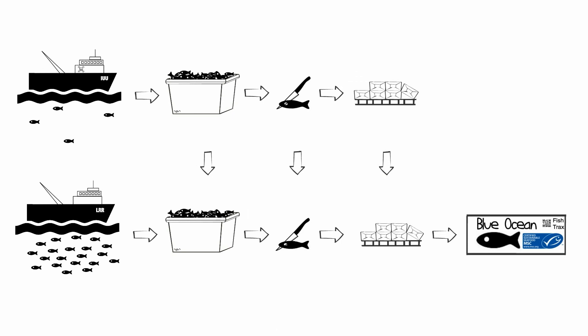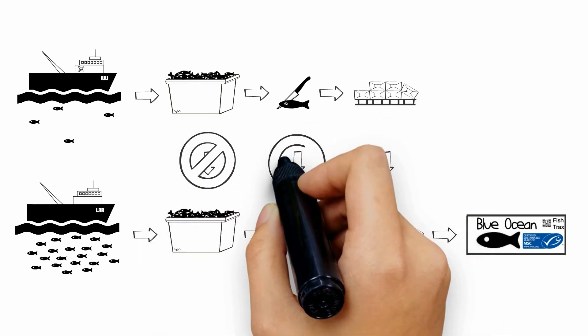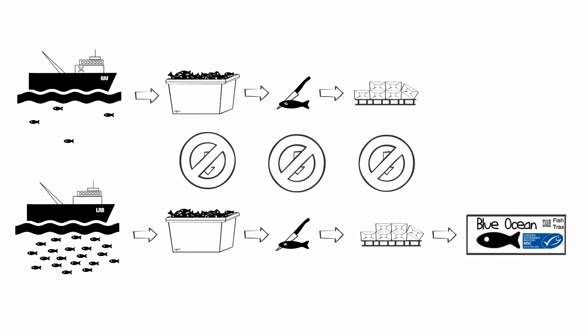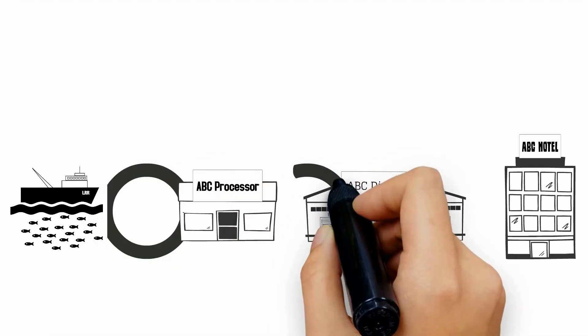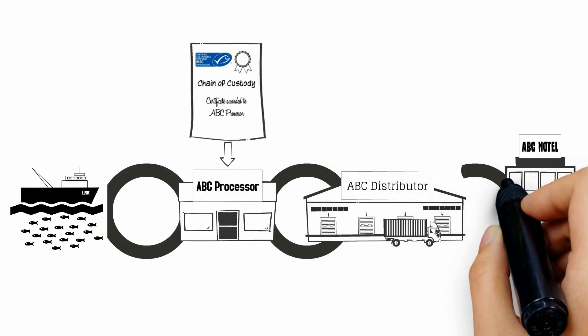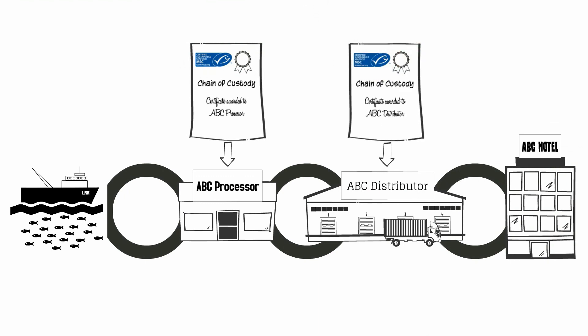However, traceability is critical through the supply chain to ensure that product that is not certified isn't mixed with certified product. Therefore, the MSC also has a chain of custody certification for processors and distributors that are able to track and trace produce through their supply chain.